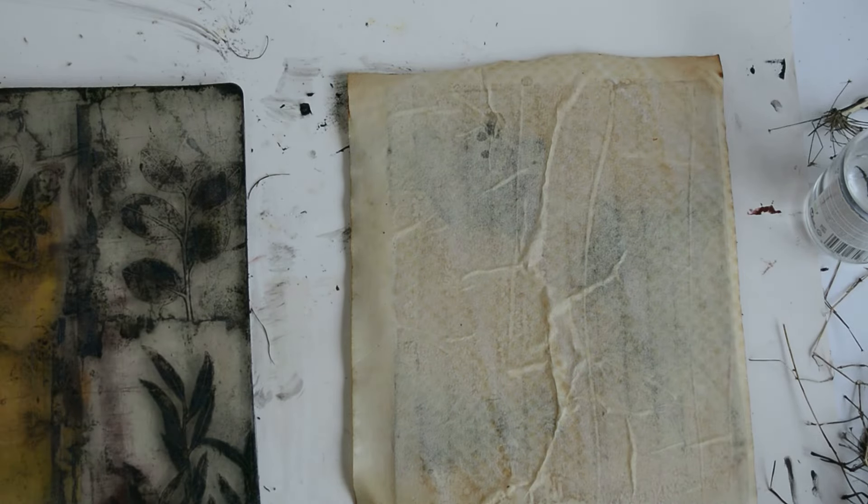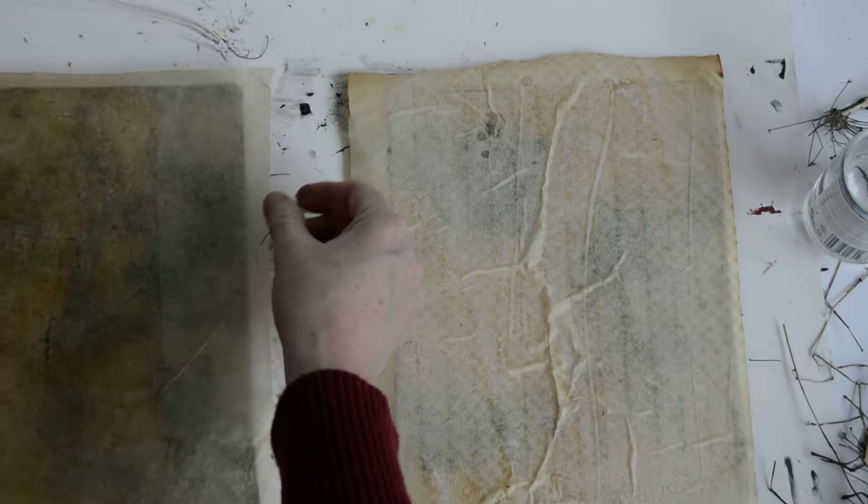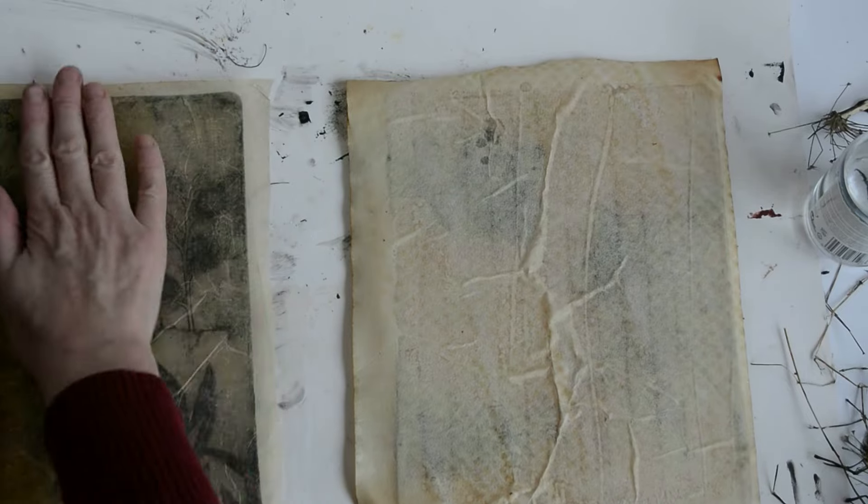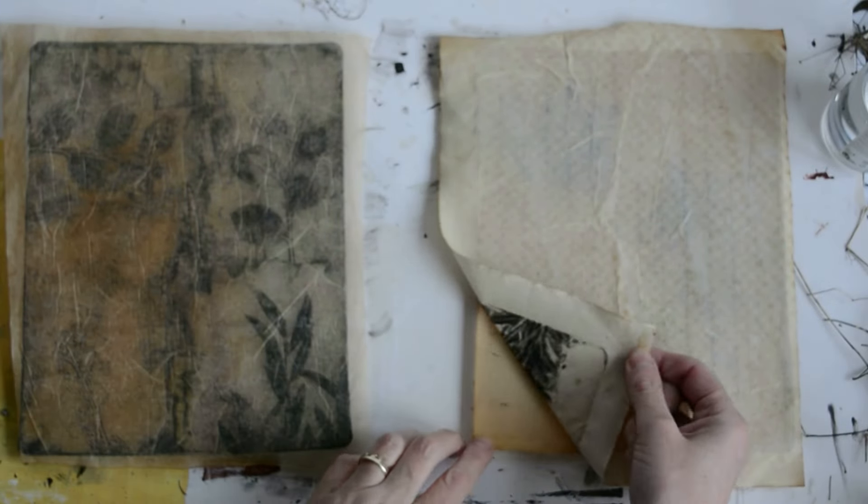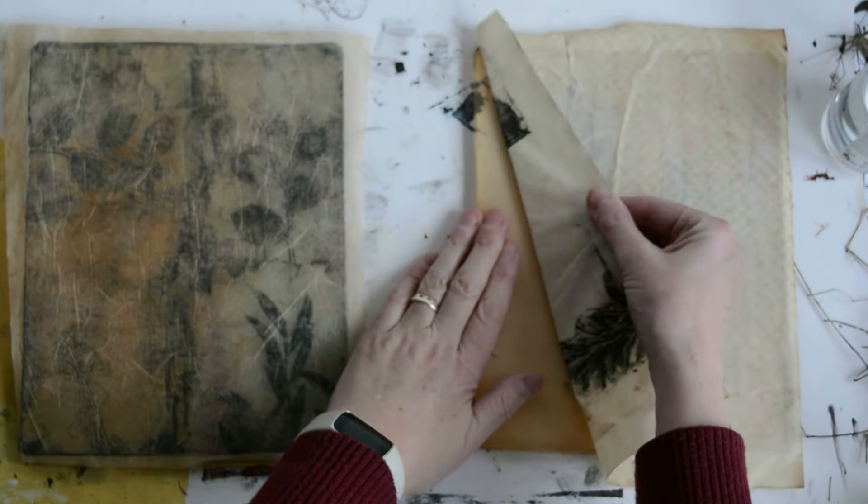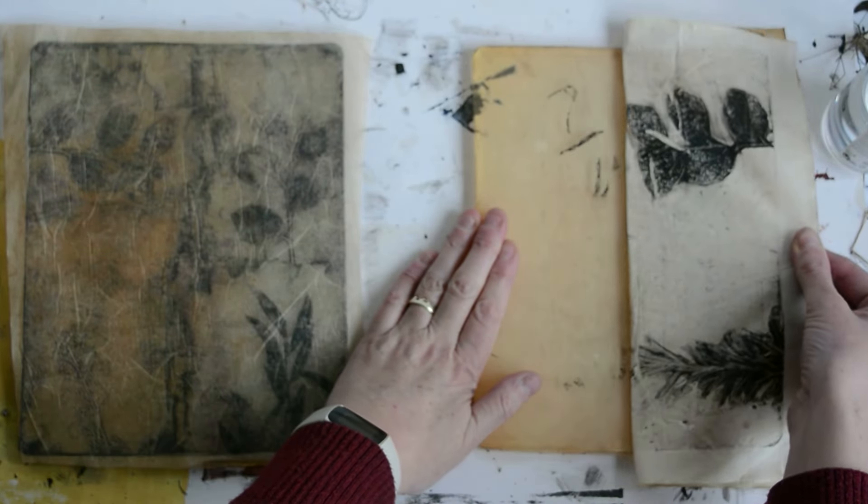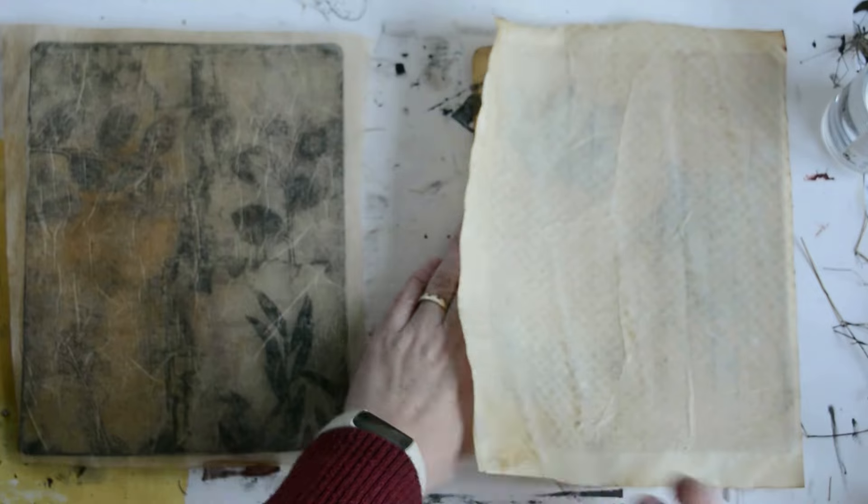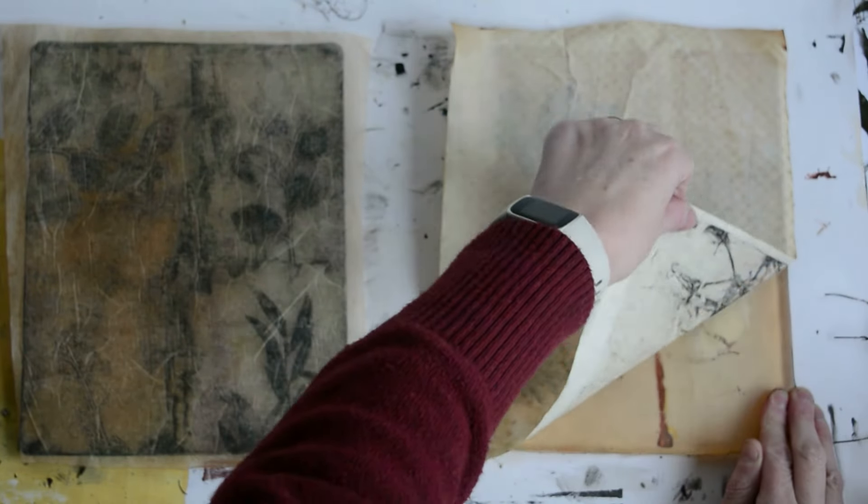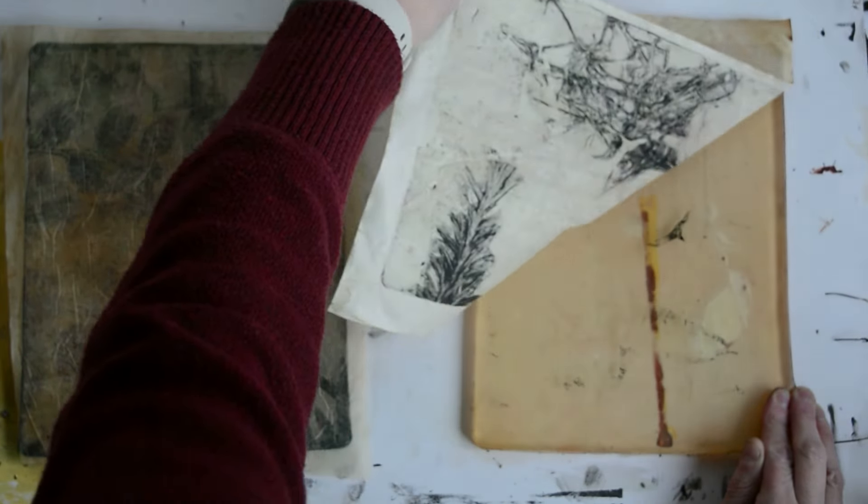So this method takes a bit more patience but you're going to get more of the black acrylic on your finished print. So once that's fully dry you can remove the print. As you can see it's taken all or most of the ink off the plate.